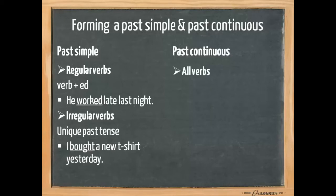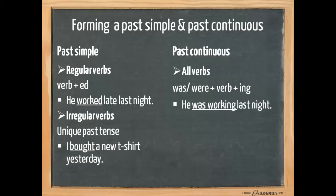For past continuous, we do not need to care about regular and irregular verbs. Because all past continuous verbs, whether they are irregular or regular verbs, are formed by using was or were, the past tense of the verb to be, the base form of the verb and ing. For example, he was working last night, or I was buying a t-shirt when I saw her yesterday.